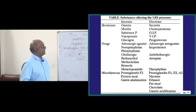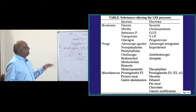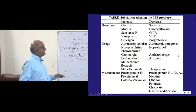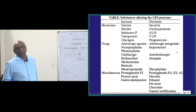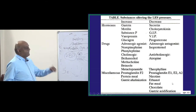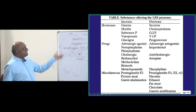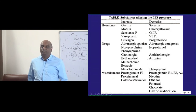You should be very sure. Secretin, cholecystokinin, VIP, progesterone, isoprenaline, anticholinergics, atropine, theophylline — all these will decrease the lower esophageal sphincter and increase the reflux. Ethanol, alcohol, fatty meal, chocolate — all these things will decrease the lower esophageal sphincteric pressure.